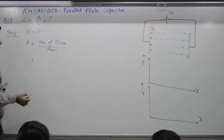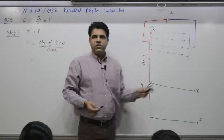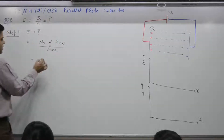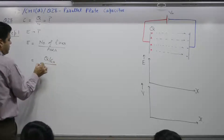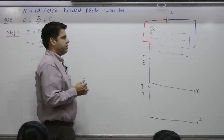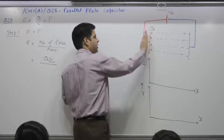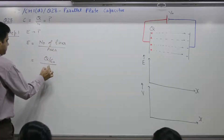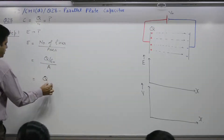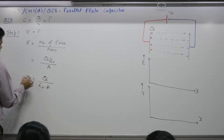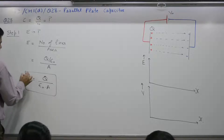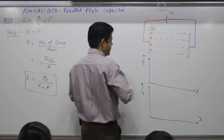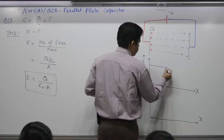If Q is the charge present, the number of lines is Q by epsilon. From one coulomb charge, one by epsilon; from two coulomb charge, two by epsilon; from Q coulomb charge, Q by epsilon. A is the area of each plate — plate one is the positive plate and the other is the negative plate. Area of the plate is A, so electric field equals Q divided by epsilon naught times A. Q is constant, epsilon naught is constant, area of the plate is constant, so electric field is also constant.